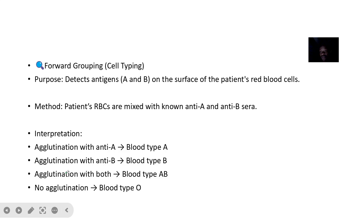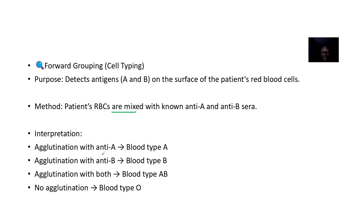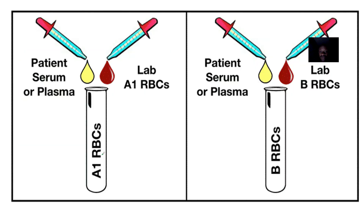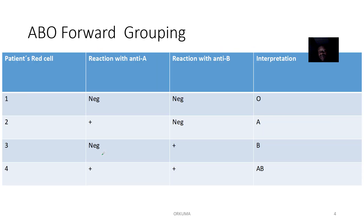For forward blood grouping, which is blood typing, you are detecting antigens on the surface of the red blood cells of the patient. You mix with anti-A serum and anti-B serum. If you agglutinate with A, it is blood group A. If you agglutinate with B, it is blood group B. If you agglutinate with both A and B, it is blood group AB. If there is no agglutination, it is blood group O.